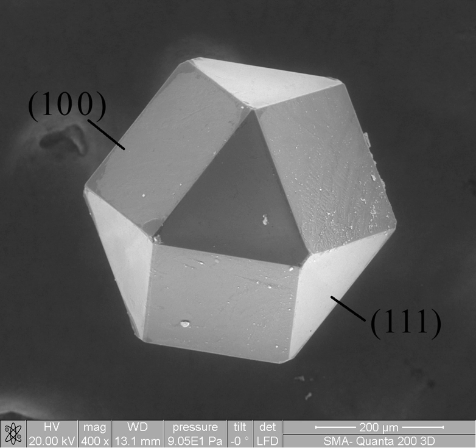Thermodynamics is concerned with heat and temperature and their relation to energy and work. It defines macroscopic variables, such as internal energy, entropy, and pressure, that partly describe a body of matter or radiation. It states that the behavior of those variables is subject to general constraints that are common to all materials, not the peculiar properties of particular materials. These general constraints are expressed in the four laws of thermodynamics. Thermodynamics describes the bulk behavior of the body, not the microscopic behaviors of the very large numbers of its microscopic constituents, such as molecules. The behavior of these microscopic particles is described by, and the laws of thermodynamics are derived from, statistical mechanics.